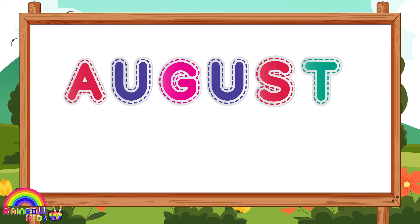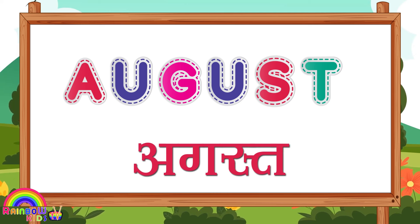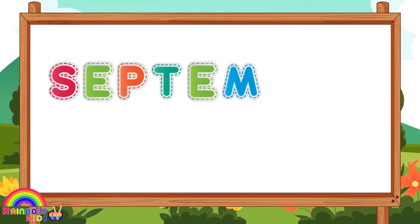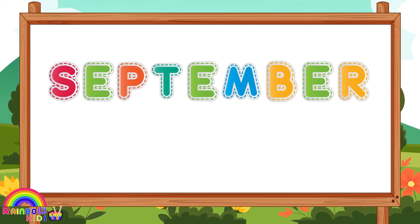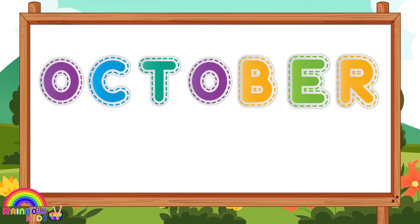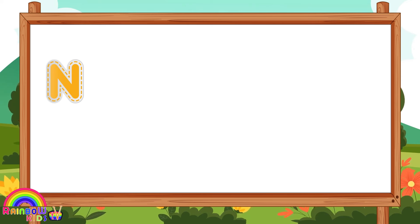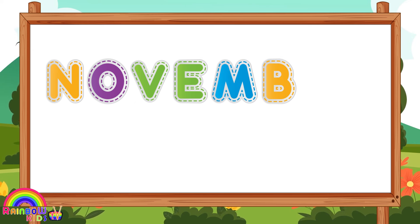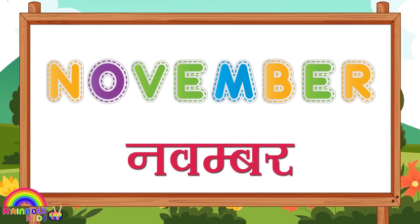August, August means August. S-E-P-T-E-M-B-E-R, September. September means September. O-C-T-O-B-E-R, October. October means October. N-O-V-E-M-B-E-R, November. November means November.